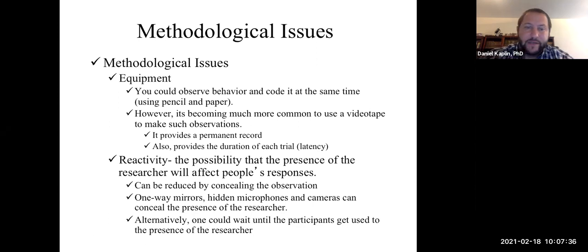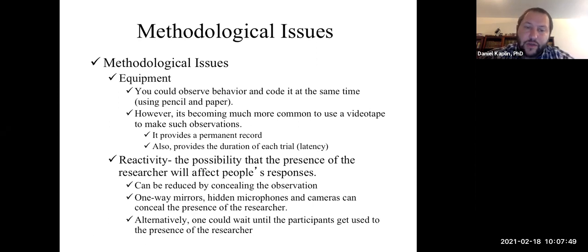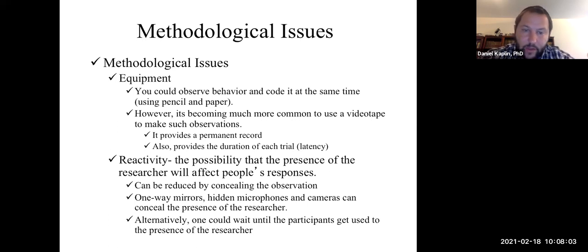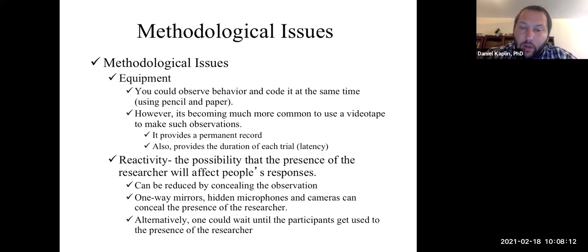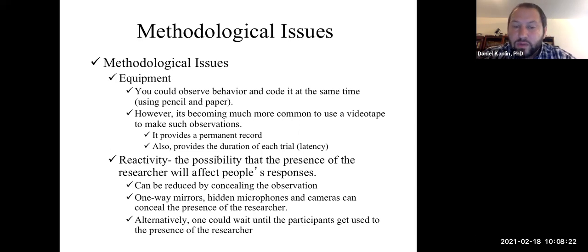Reactivity — people will change their behavior when they know they're being watched. If you choose to conceal your observation, that could reduce reactivity. There are ways to do that, such as one-way mirrors — as you've seen in Law and Order episodes — or hidden microphones, where people provide meaningful data because they don't know they're being recorded or watched. If you don't want to conceal yourself, you can allow time for participants to get used to the researcher being there, and that helps.